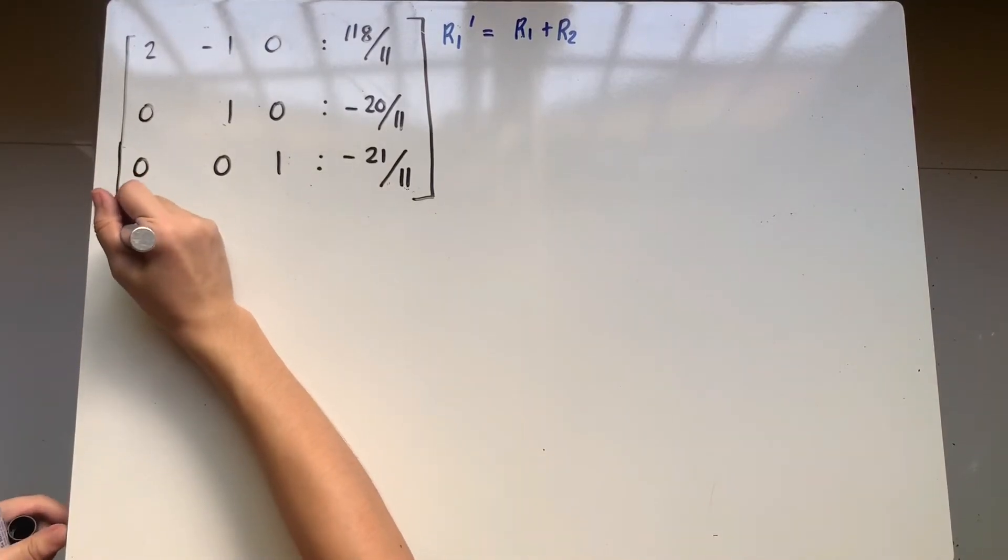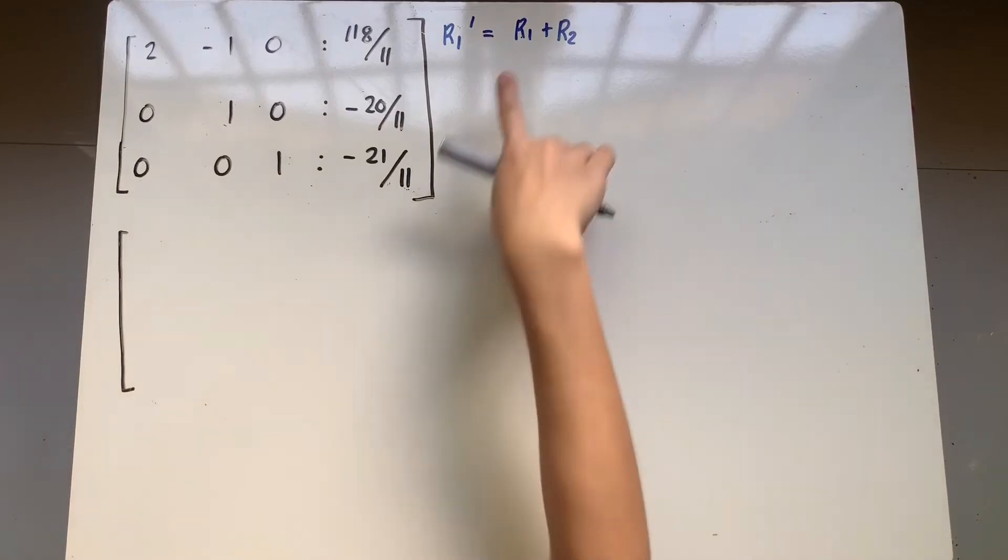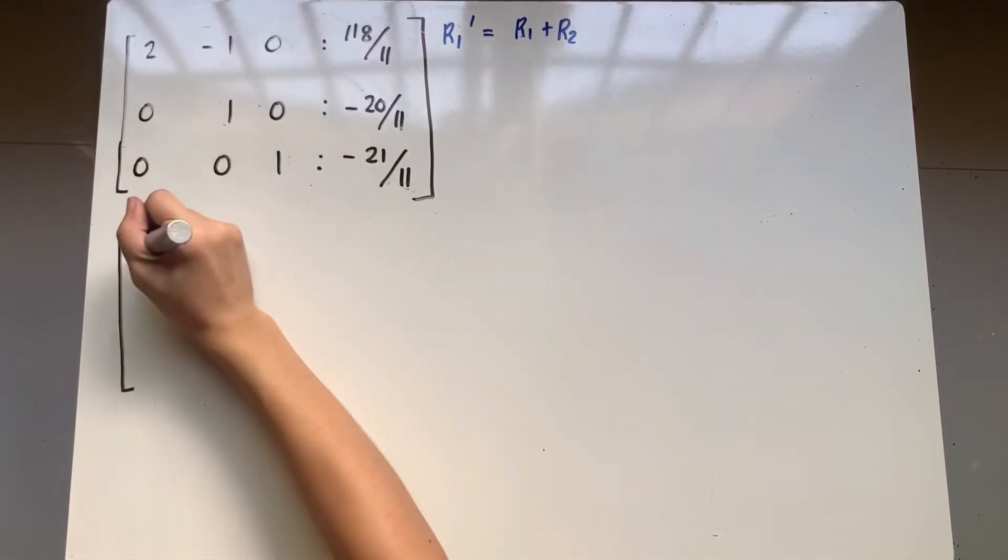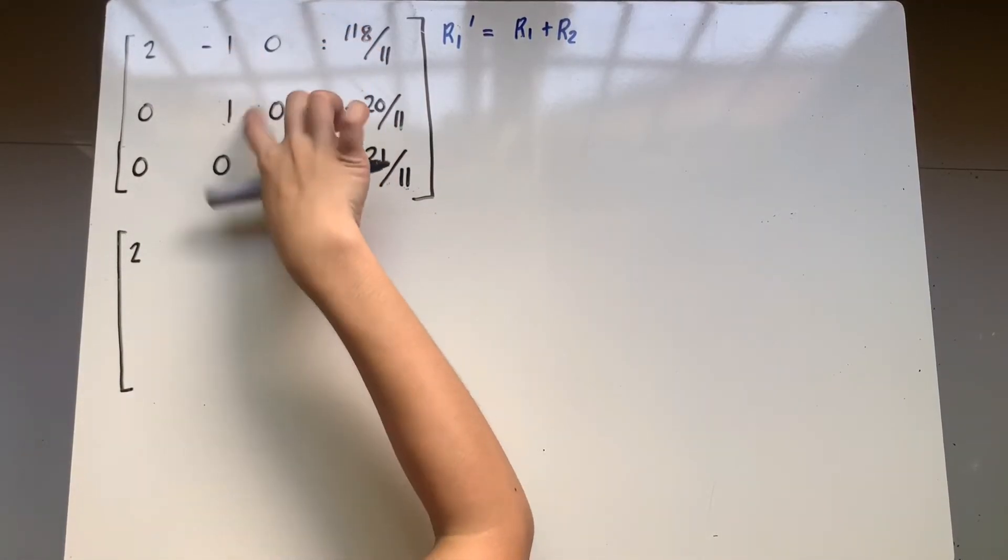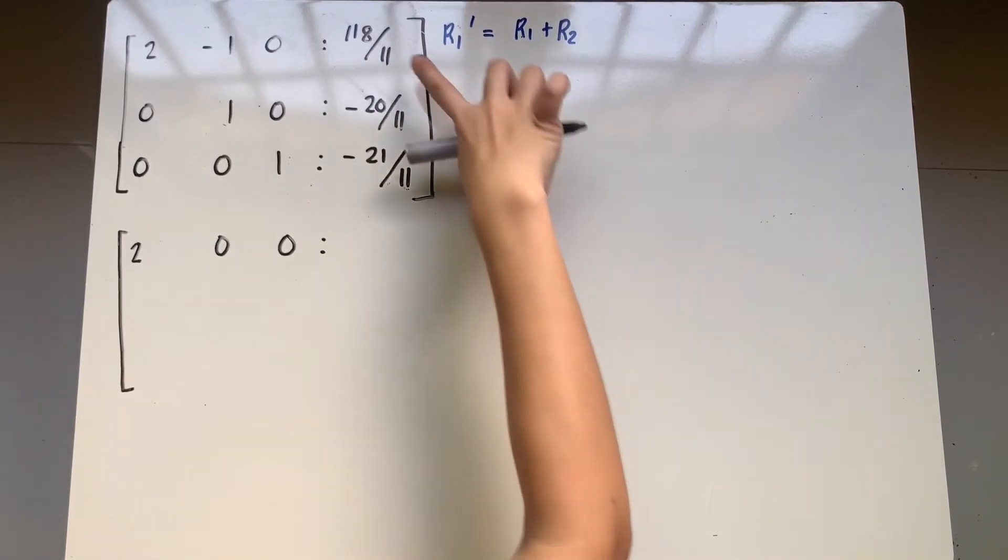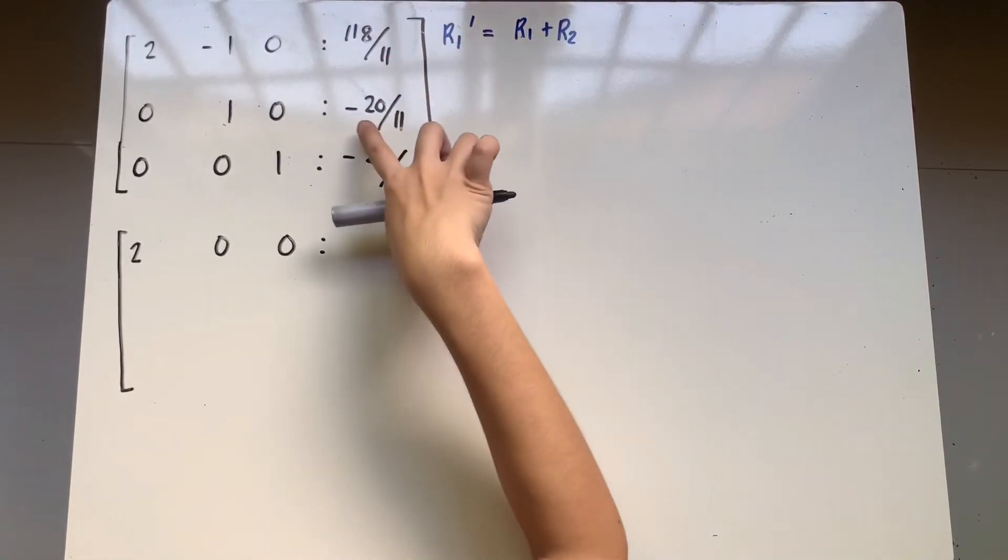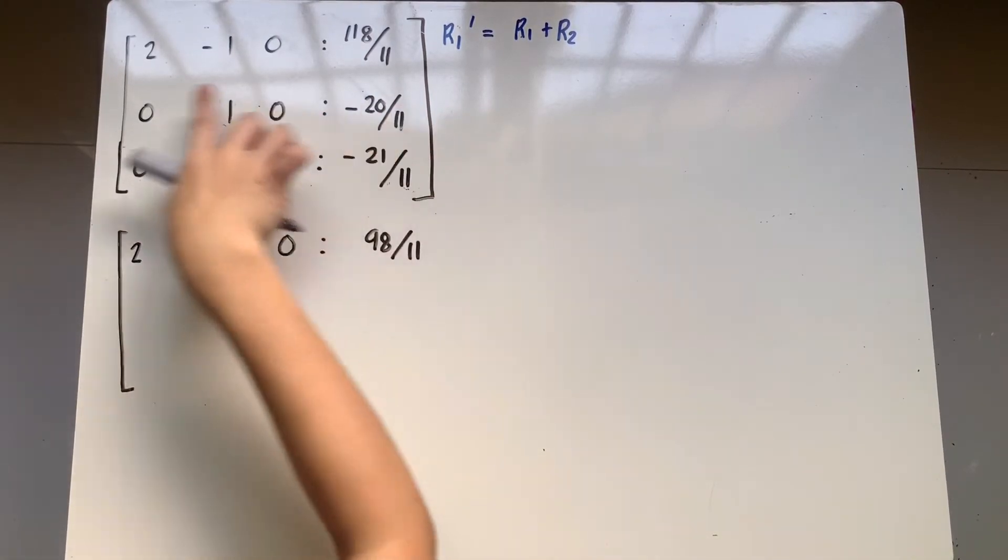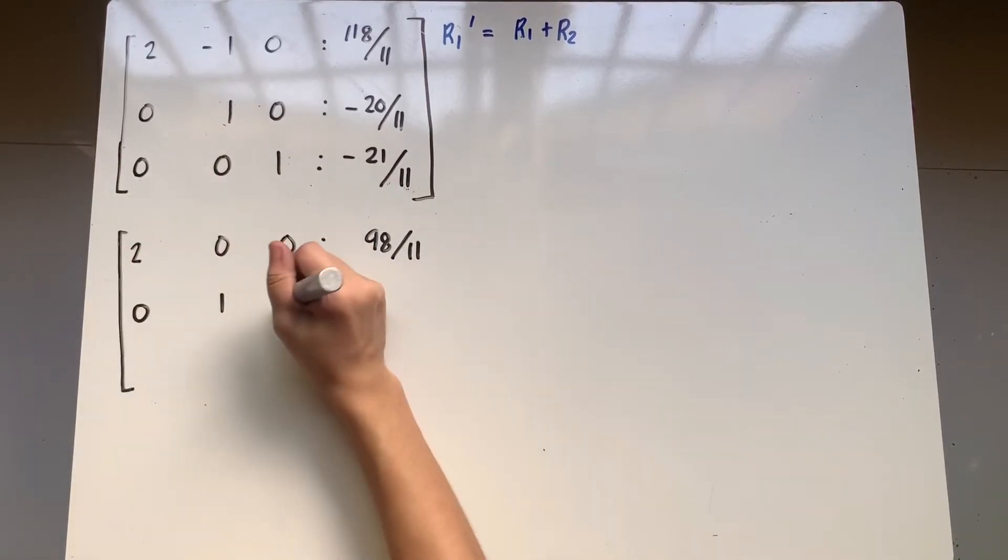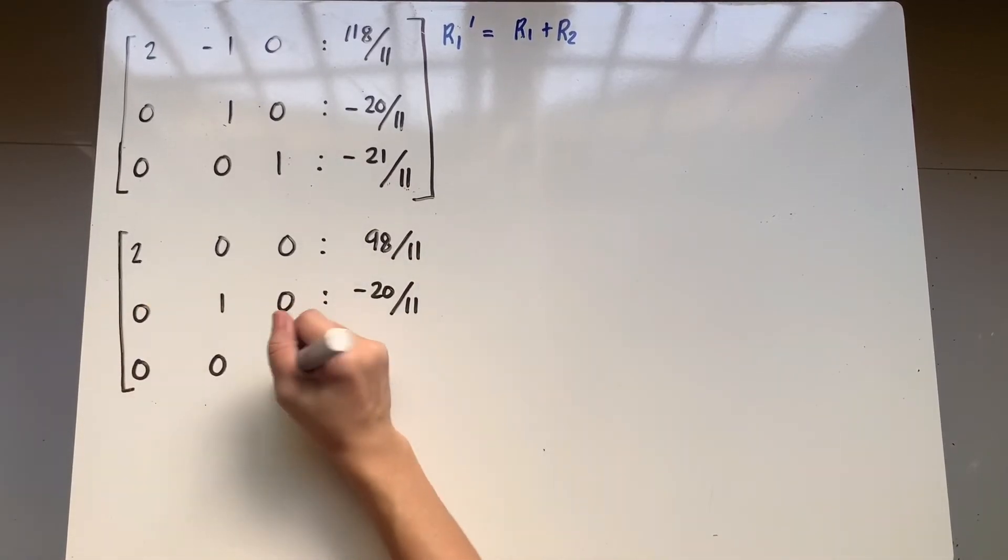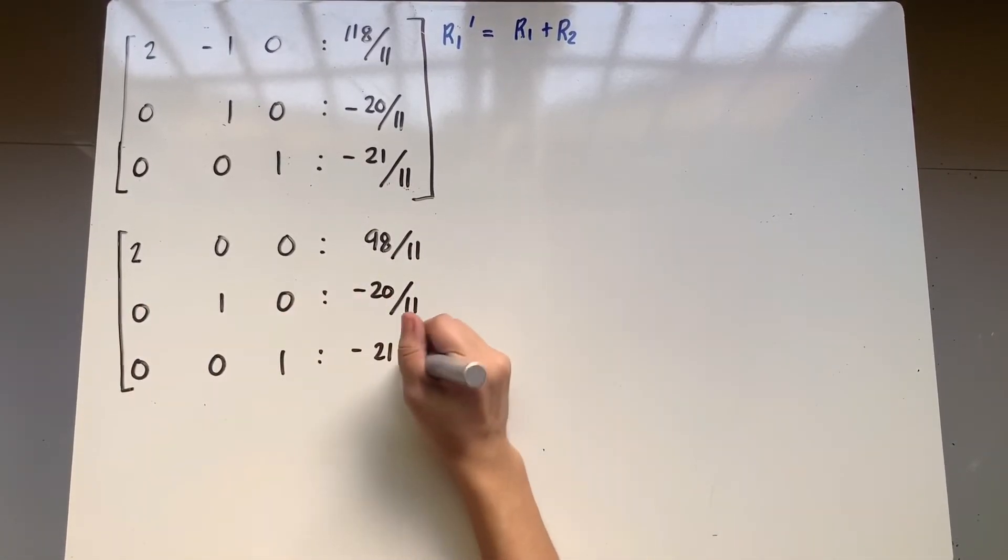I will have a new first row. And that would be sum of first and second rows. So, pag-a-add din daw ito. 2 plus 0 is 2. Negative 1 plus 1 is 0. 0 plus 0 is 0. 118 over 11 plus negative 20 over 11, that's 98 over 11. And then, no changes on the second and third rows. So, that would be 0, 1, 0, negative 20 over 11. And 0, 0, 1, negative 21 over 11.